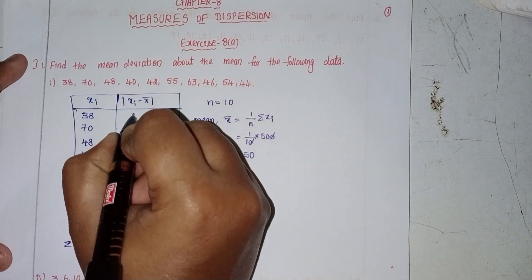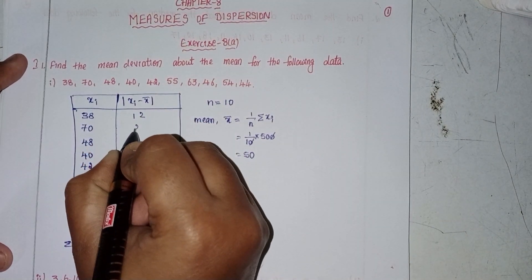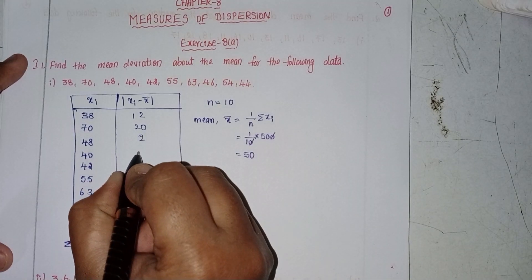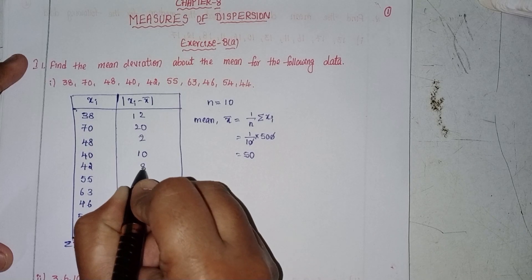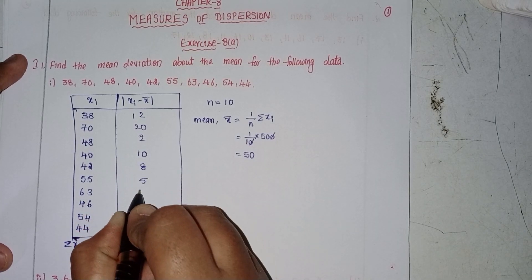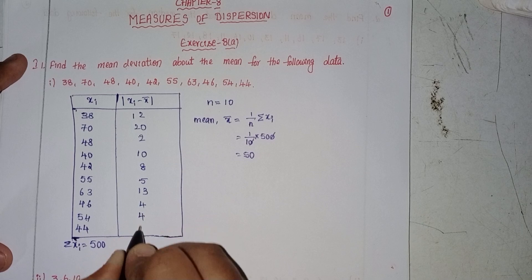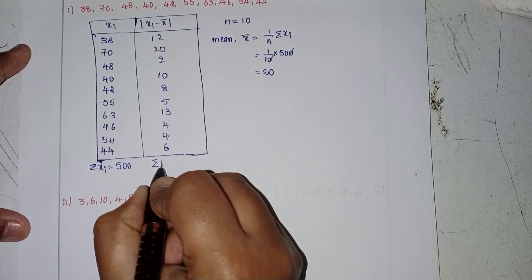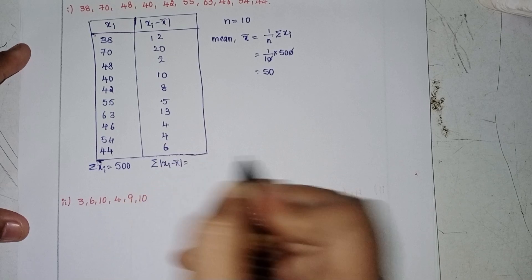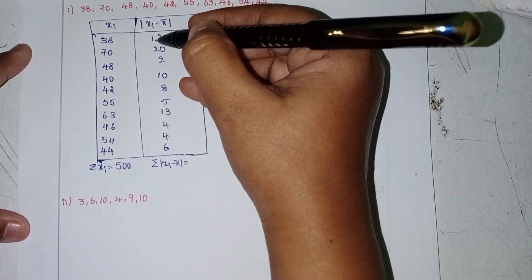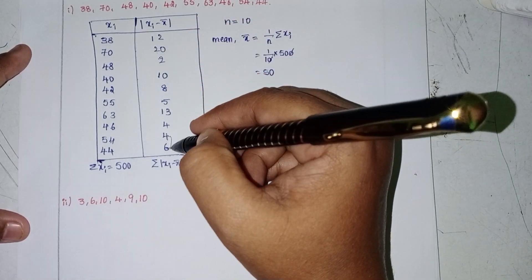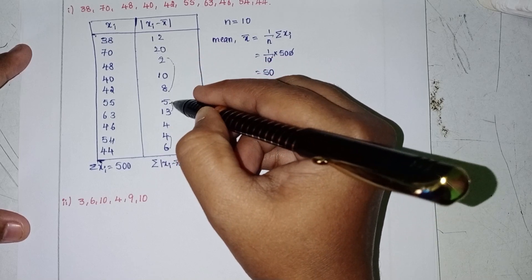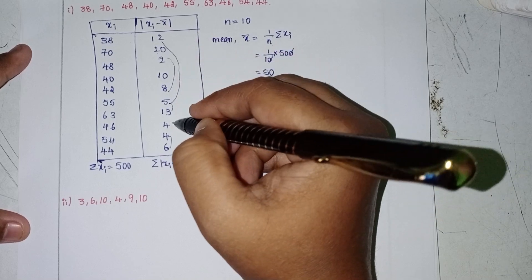Now computing the absolute deviations |xi − x̄|: 38 − 50 = 12, 70 − 50 = 20, 48 − 50 = 2, 40 − 50 = 10, then 8, 5, 13, 4, 4, 6. Adding them up: 10, 30, 40, 50, 60, 60, 70, 70, 80, 84.